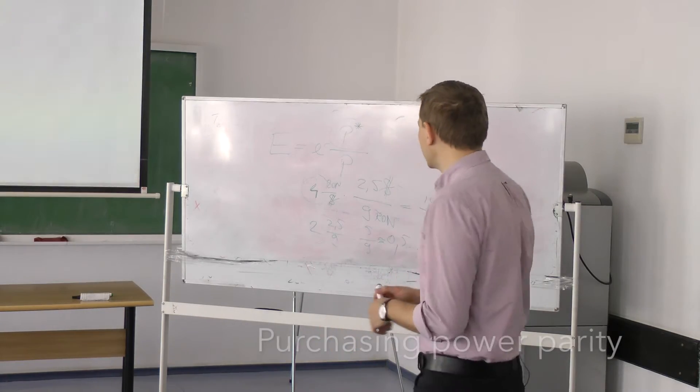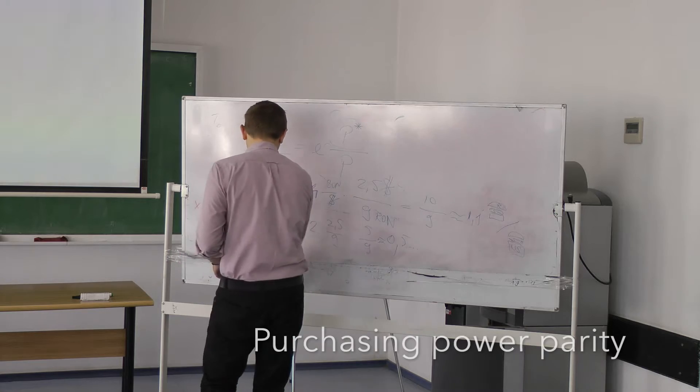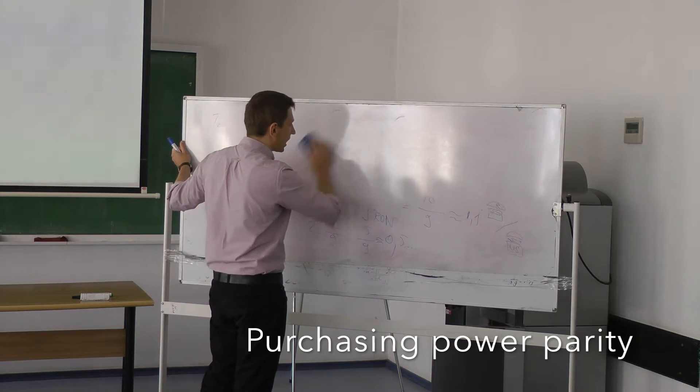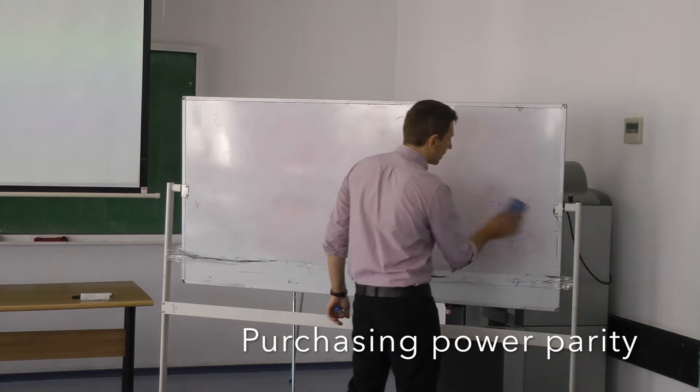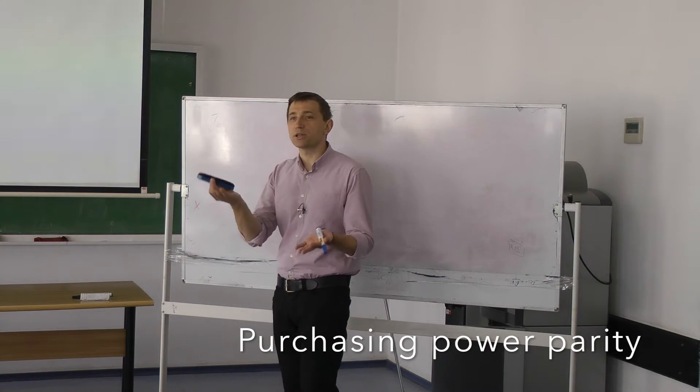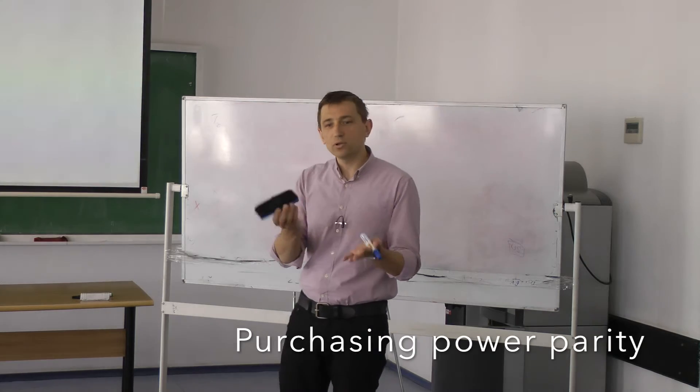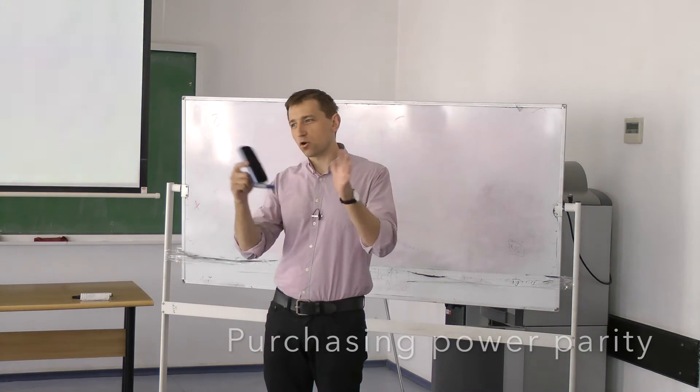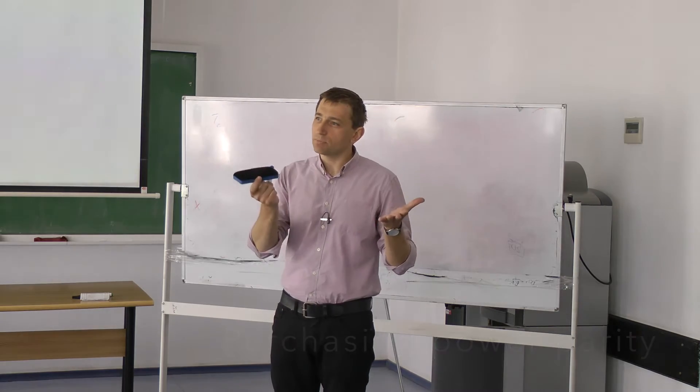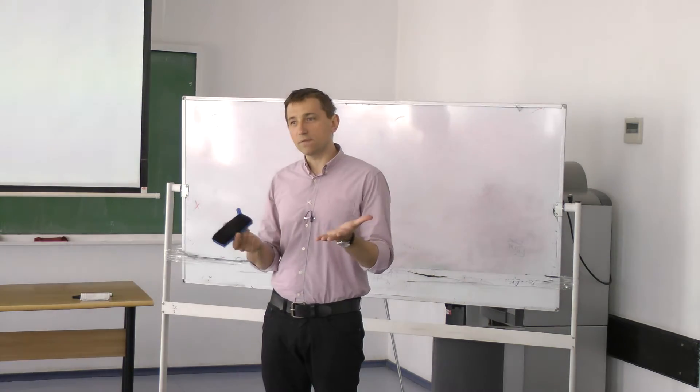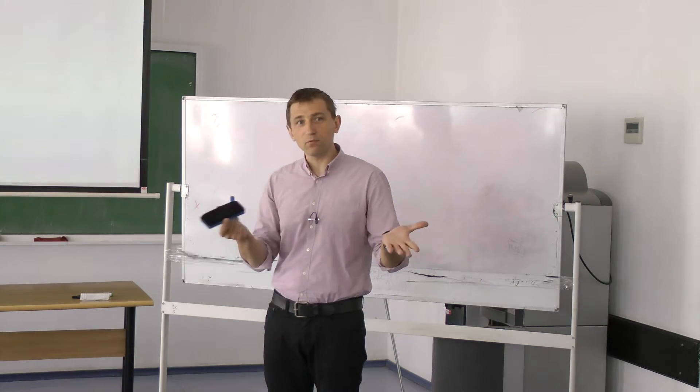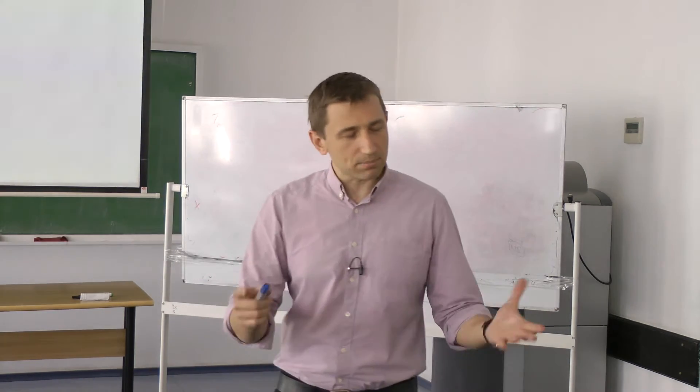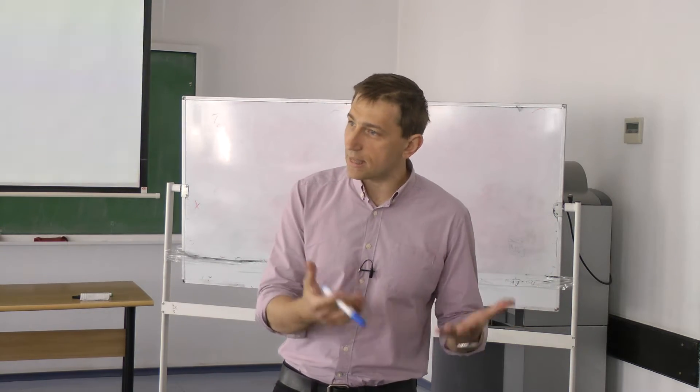So purchasing power parity means that in international relationships between countries, I mean trade, there should be some kind of equilibrium in purchasing power. The money should have more or less the same, we're going to see, we can take it in a stronger way or an easier way. The money should have more or less the same purchasing power because if they don't, if money is not the same everywhere, there could be some consequences. You understand why it is about purchasing power, it's about real goods and services that money can buy.